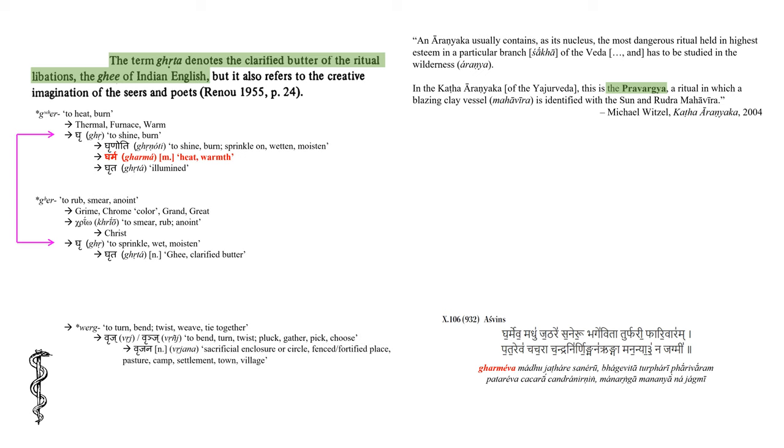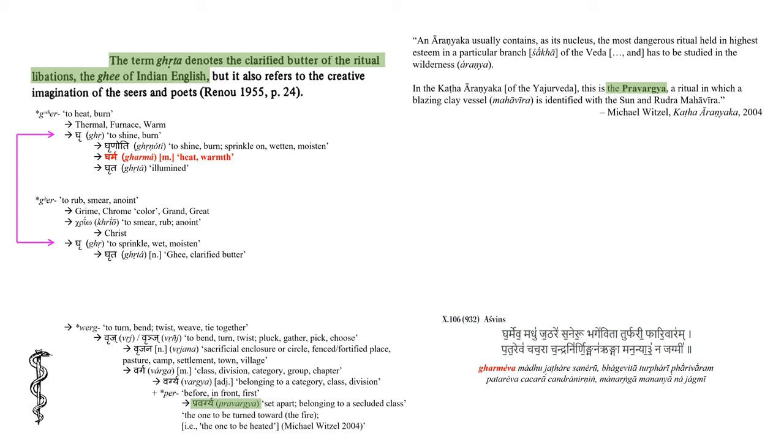The word Pravargya comes from a root bearing the sense to turn, bend, twist, weave, and tie together. We get the words Vrajana, a sacrificial enclosure or circle, something fenced or a fortified place, a pasture, a camp, a settlement, a town, or a village. And the word Varga - a class, division, category, group, or some chapter. And if we add to this latter word our familiar root Per, we get Pravargya, something set apart or belonging to a secluded class. But Michael Witzel prefers a more poetic definition: A Pravargya is the one to be turned towards the fire - that is, the one to be heated. Keeping track of the etymological roots, we can treat Varg to be an extension of our familiar root Var, which gave us the words aware and Vratya.